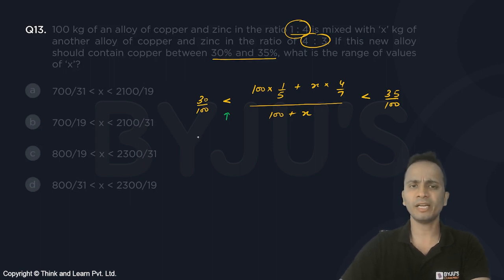So 3 into 100, that is 300 plus 3x, is equal to—not equal to but less than—so it is less than 200 plus 40/7 x.